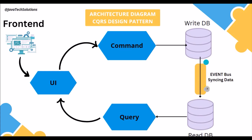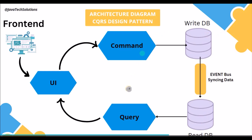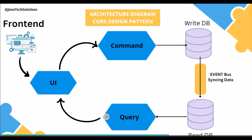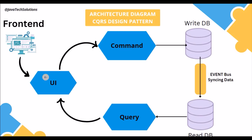There is one event bus that asynchronously syncs data from the write DB to the read DB. Whenever any order details are inserted into the write DB, the event bus handles syncing to the read DB. The command returns only a success or failure response. The query side just fetches data from its table, so there is no locking. This is the overall architecture of the CQRS design pattern with two separate databases.